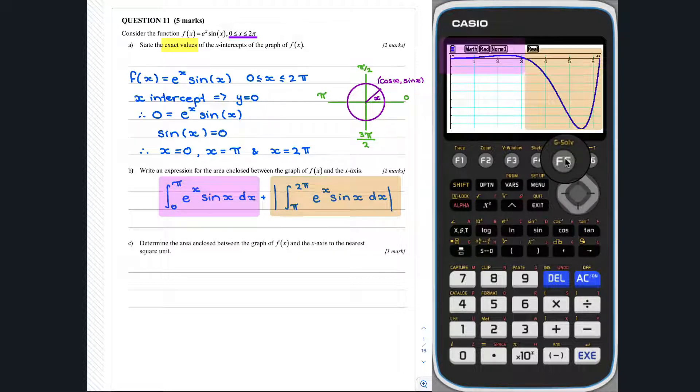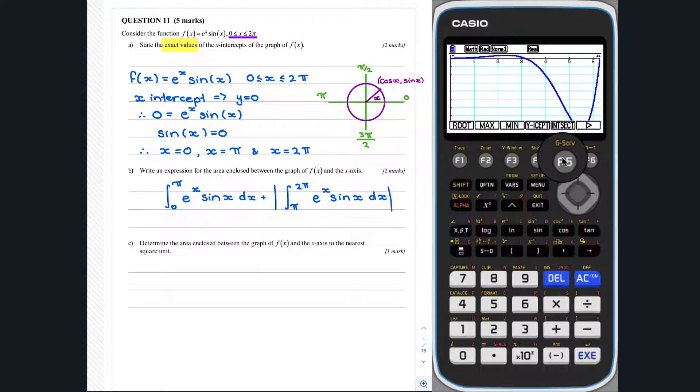Question 11, part C. The integral from part b can be quickly evaluated using the graph we produced earlier. Since we have some area above and below the x-axis, we can use the mixed integral option. To find that, we go gsolve, integral, and mixed.